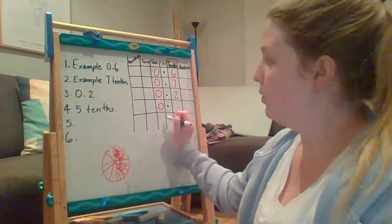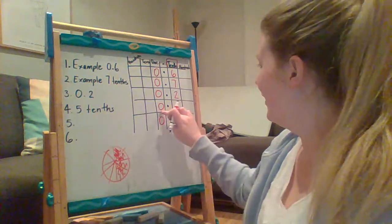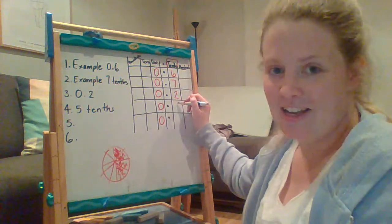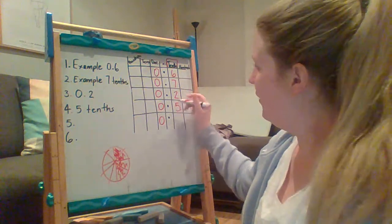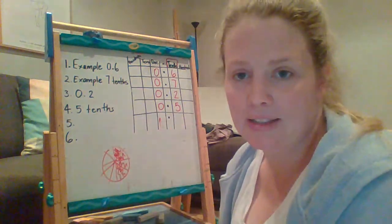So I would need zero and a five. Good. I've got five tenths, five out of ten pieces.